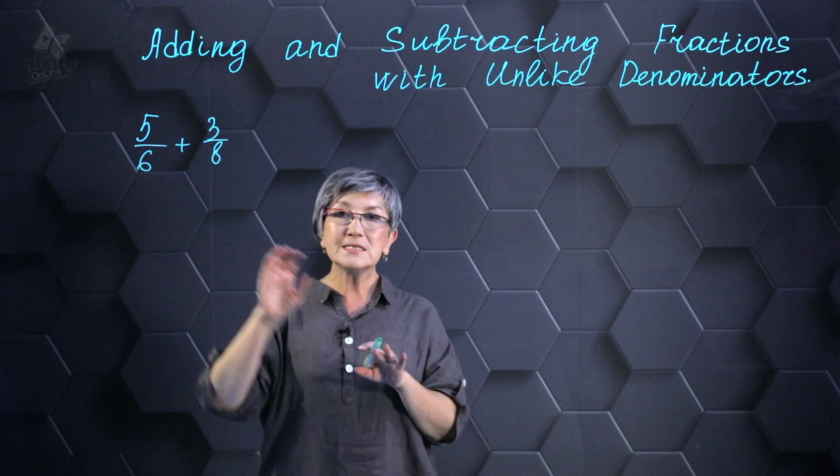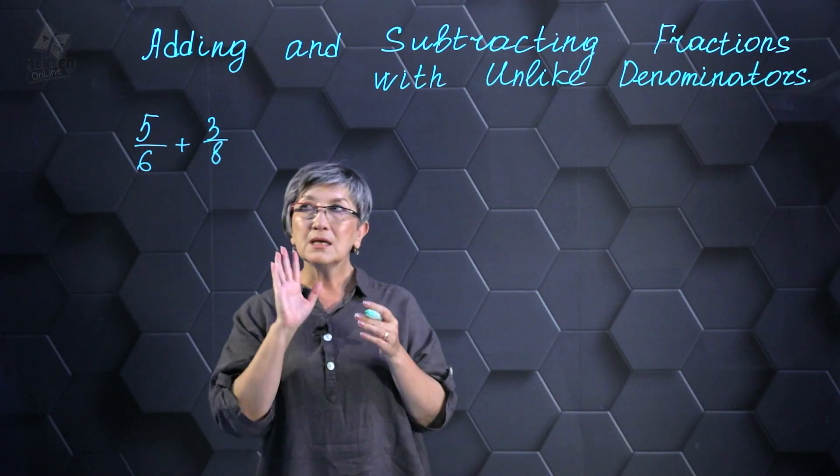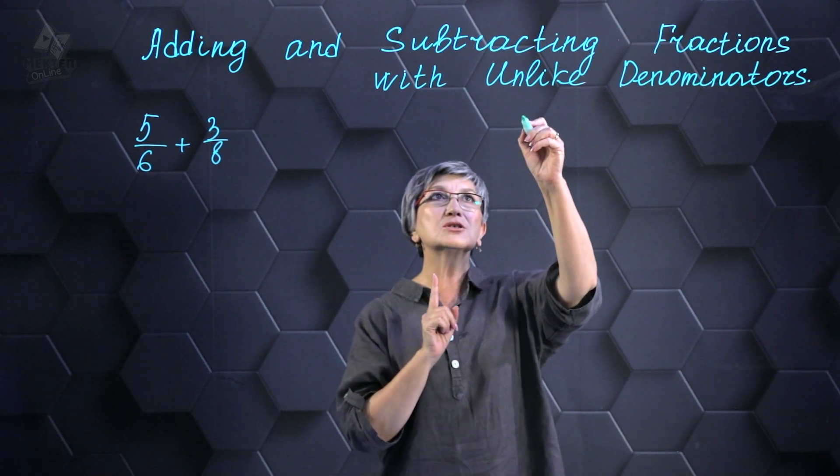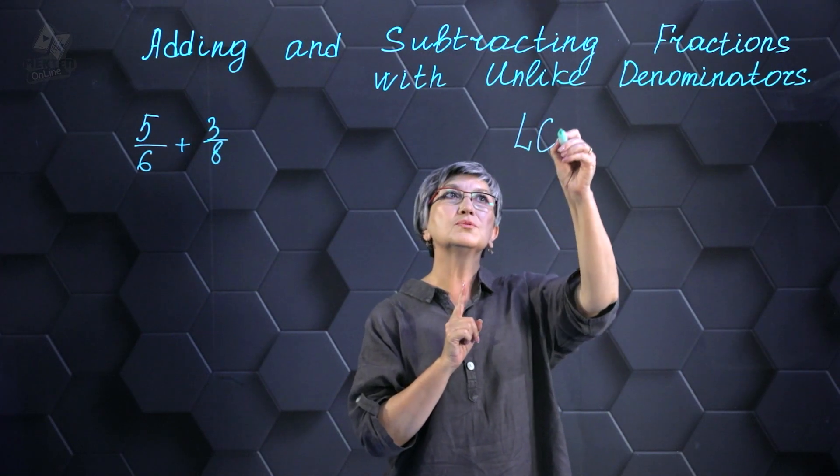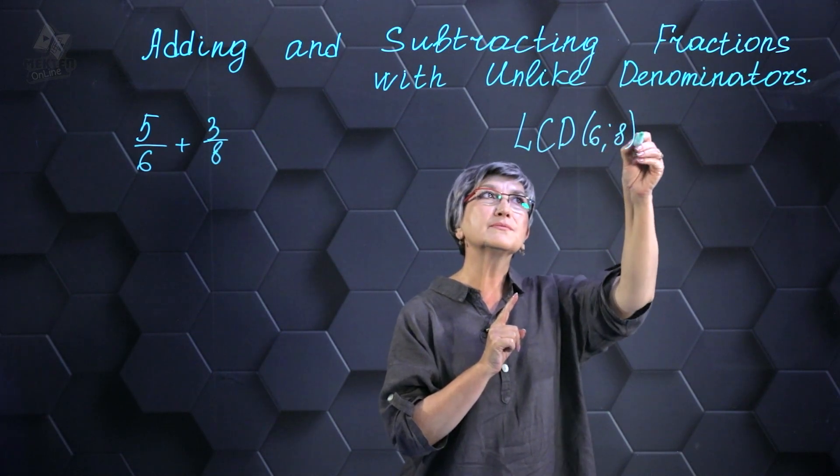However, the number 6 is not equal to 8, so we need to align them. Therefore, what actions do we need to take? We must locate the least common denominators. Specifically, we need to find the common denominators for the numbers 6 and 8.